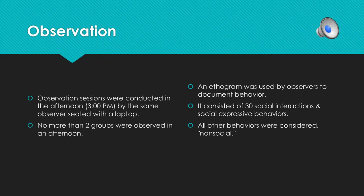The observation sessions were conducted in a strict and consistent manner. Each session occurred in the afternoon at 3 o'clock, observed by the same person each time, who was always seated in a neutral position in the room with their laptop. No more than two groups were observed in an afternoon, and interactions were recorded using an ethogram with a list of 30 standard social interactions and expressive behaviors. Any behaviors not listed were considered non-social.